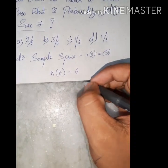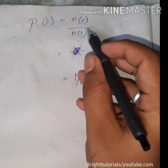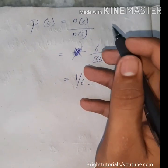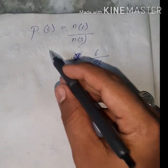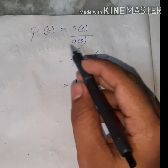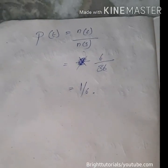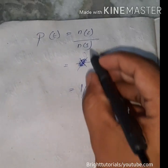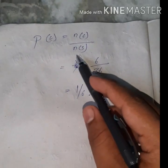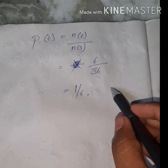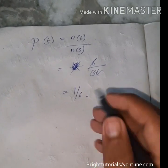Using the triangle trick we found n(E) = 6 and n(S) = 36. Substituting into the formula P(E) = n(E) / n(S), we get 6/36, which simplifies by cancellation to 1/6.